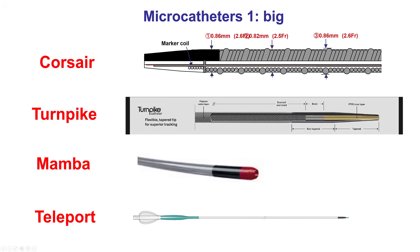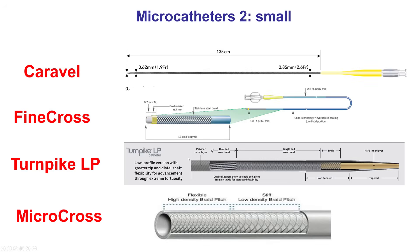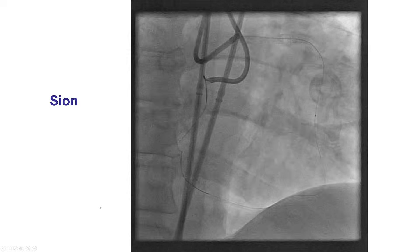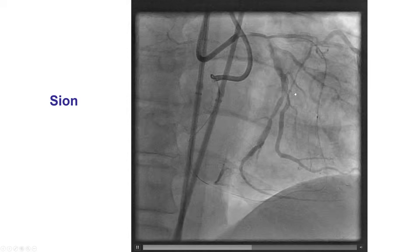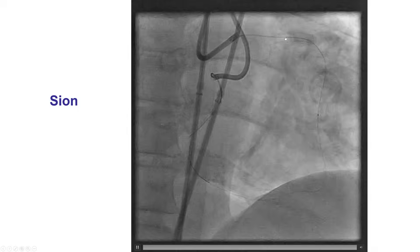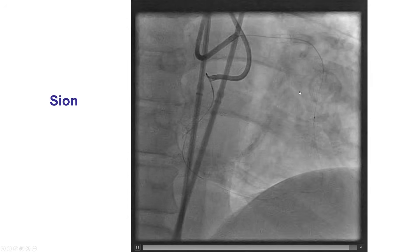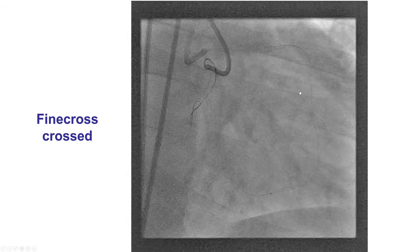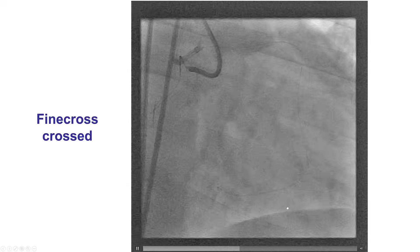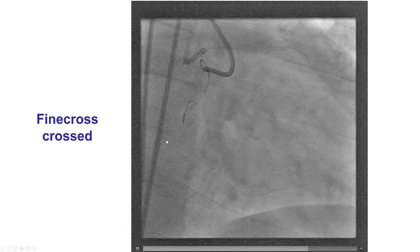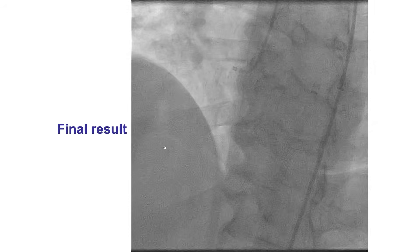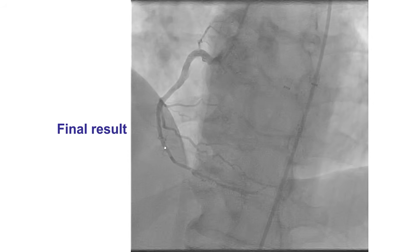These are some of the bigger microcatheters — one can torque them, spinning rapidly in one direction or another. And these are some of the smaller lower-profile microcatheters, such as the Caraval, Fine Cross, Turnpike LP, and the Micro Cross. This is an example of a RCA CTO with a retrograde guide wire advanced from the LAD. There was an inability to advance a Corsair microcatheter; however, a Fine Cross microcatheter could successfully cross through the septal into the distal right coronary artery, and that led to successful re-canalization.